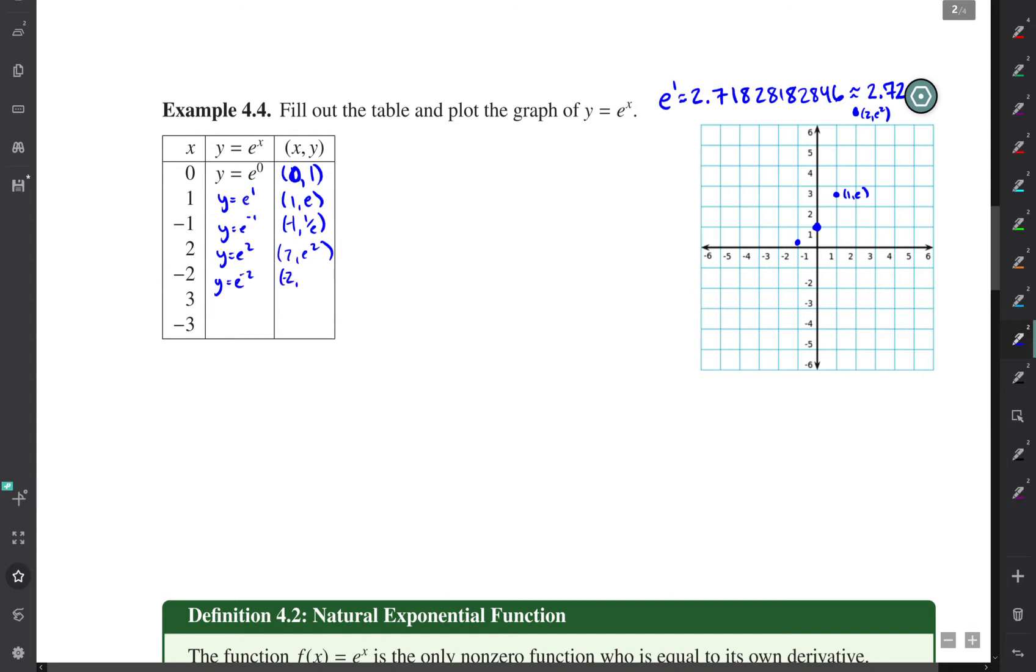For negative two, you get (-2, 1/e²), which is really small. If you plug in negative three, you get even smaller. If you plug in three, you get e cubed. So you get a graph that starts off really small, goes through (0,1), and then grows really quickly once you start plugging in positive values.